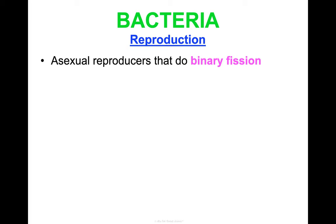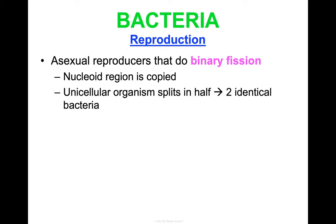Let's talk about how bacteria reproduce. They are asexual reproducers and reproduce by binary fission. It's a simple process: the nucleoid region with that circular chromosome is copied, and then that unicellular prokaryotic organism simply splits in half. The cytoplasm is split into two, yielding two identical bacteria. So if they're making identical offspring through asexual reproduction, how are bacteria able to evolve via natural selection?